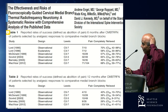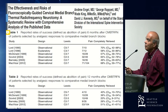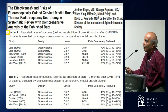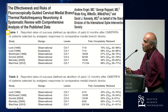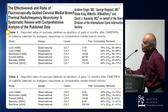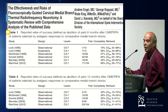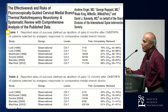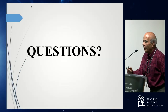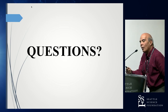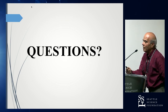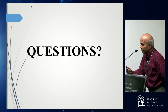Regarding the effectiveness of fluoroscopy-guided cervical medial branch RFA: in the hands of experienced practitioners, the success rate at six months oscillates between 50 and 70 percent. At 12 months, effectiveness reduces quite drastically — at best it can be up to 50 percent. I apologize for the problems with all those pictures that did not show as they were supposed to.